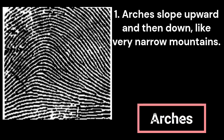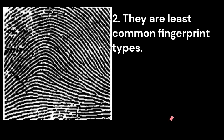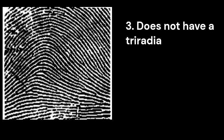First of all, we will discuss arches. Arches are the rarest type of fingerprint patterns found in human populations. They are also the simplest type of fingerprint patterns. In an arch, the ridges move from one side of the finger to the other side, making a mound in the center. An arch does not have a triradius.